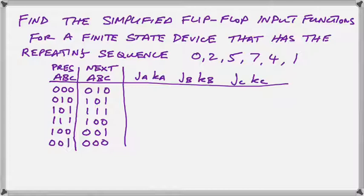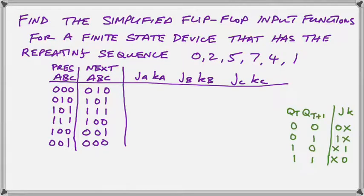Now in order to be able to find our flip-flop input functions, we need to have the excitation table for the JK flip-flop. There is the excitation table on the right in green, and this shows us what we need to put on the J and K input in order to bring the output to the desired state. We're going to go through this slowly now so that you can follow along.